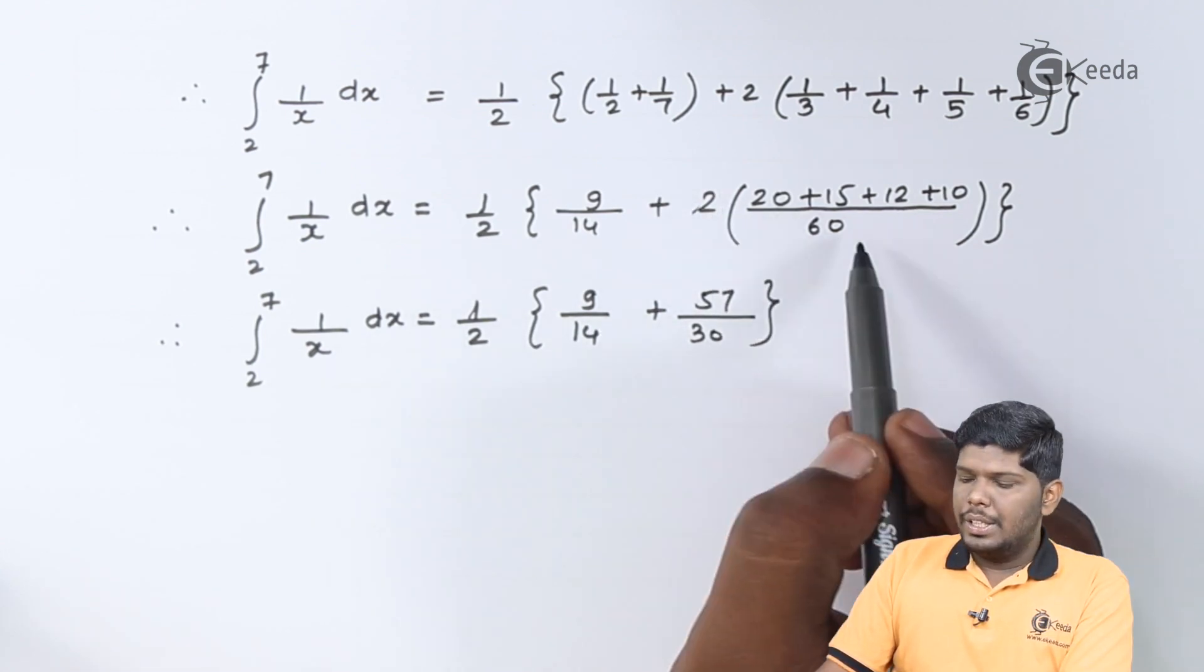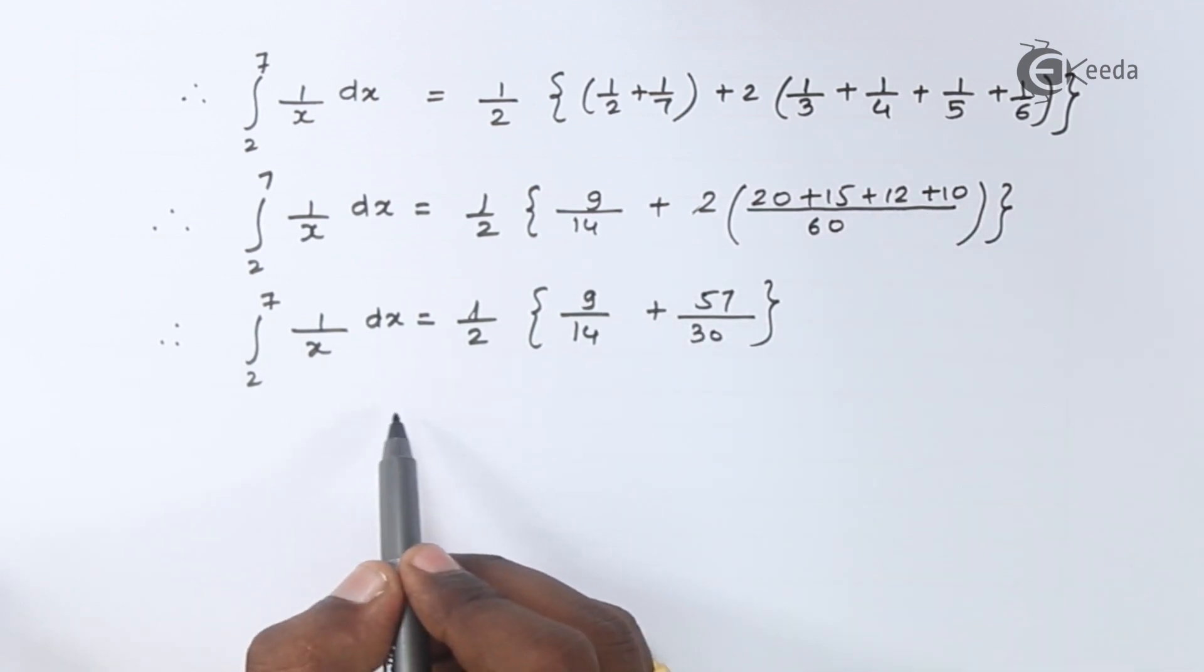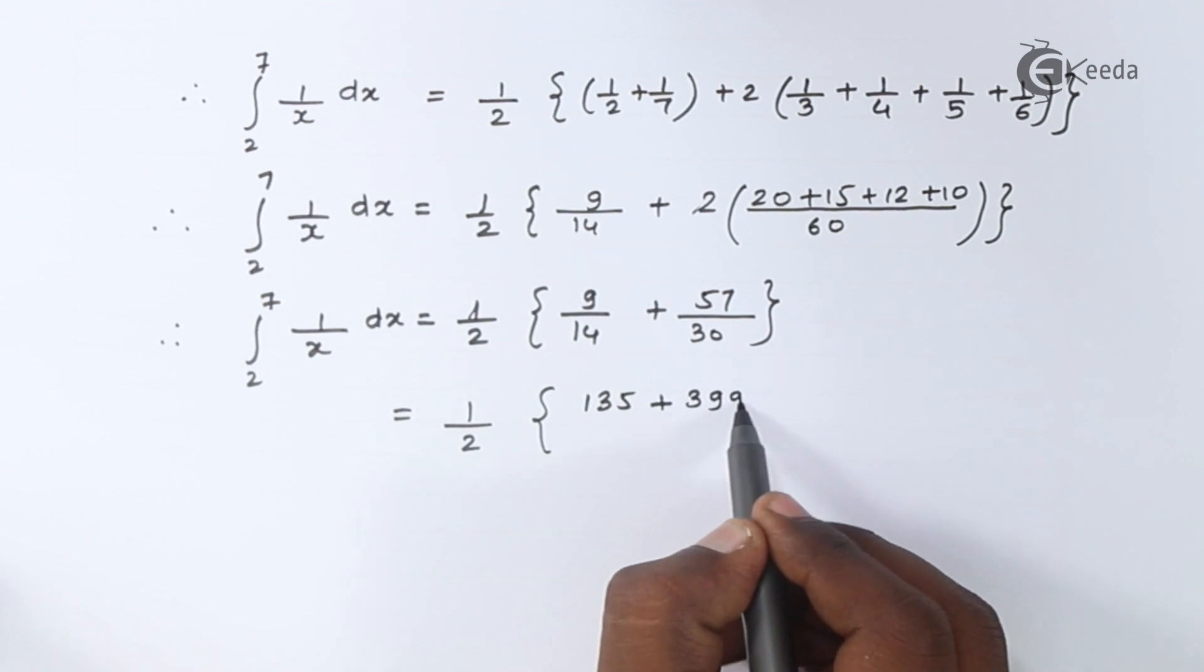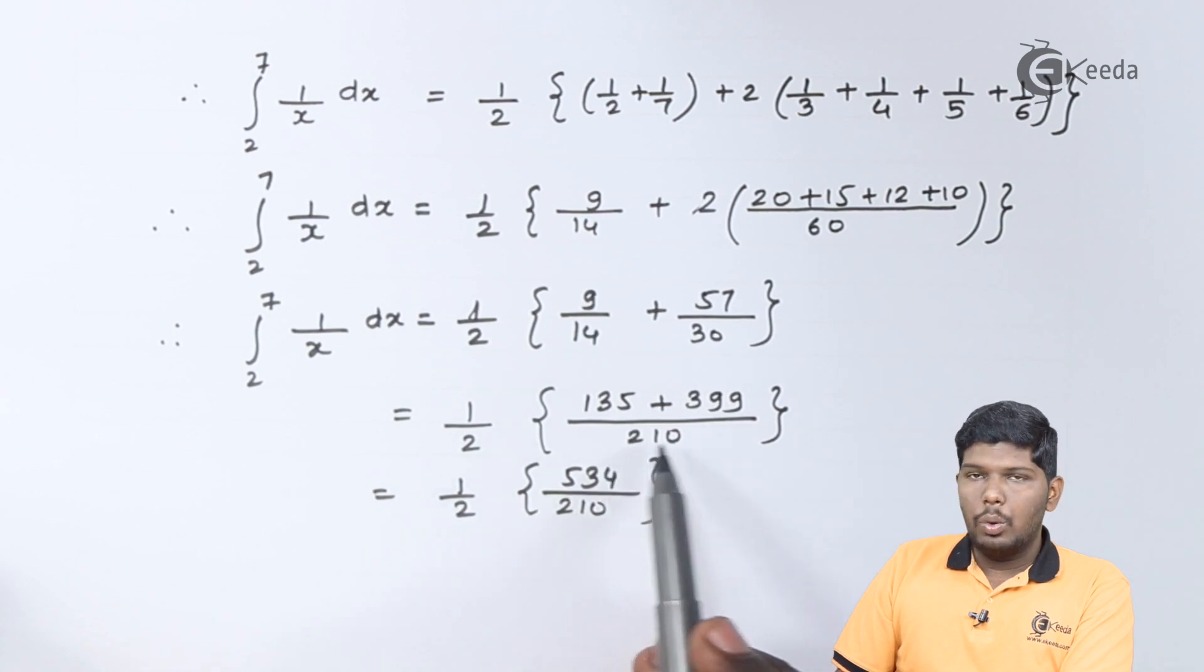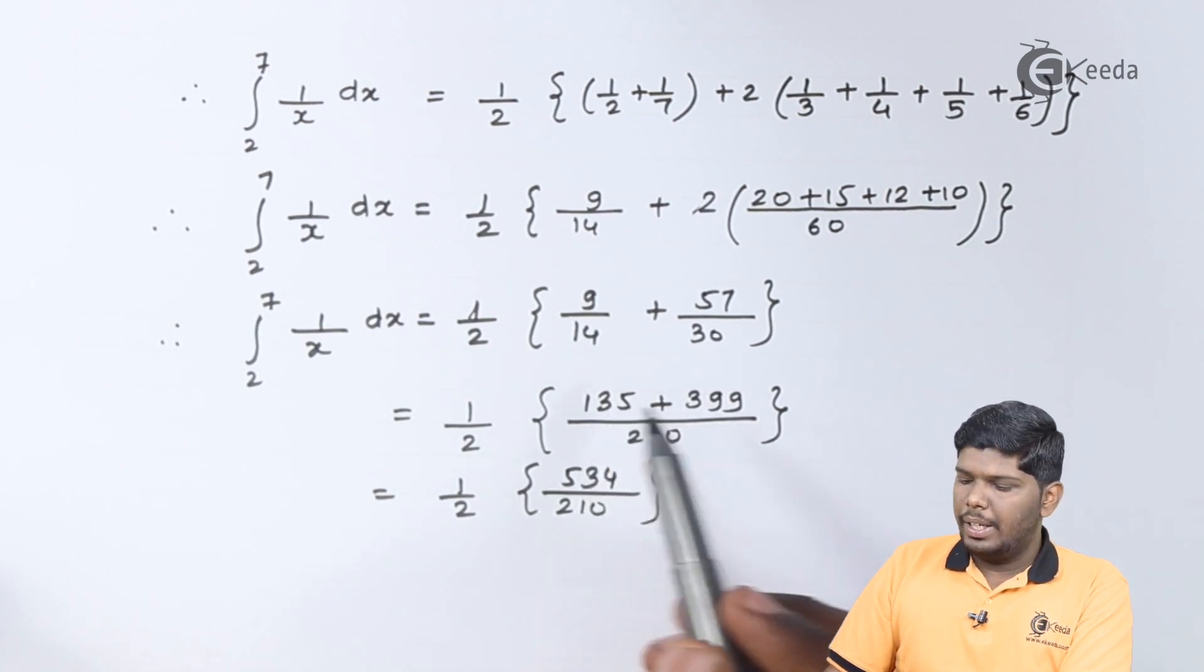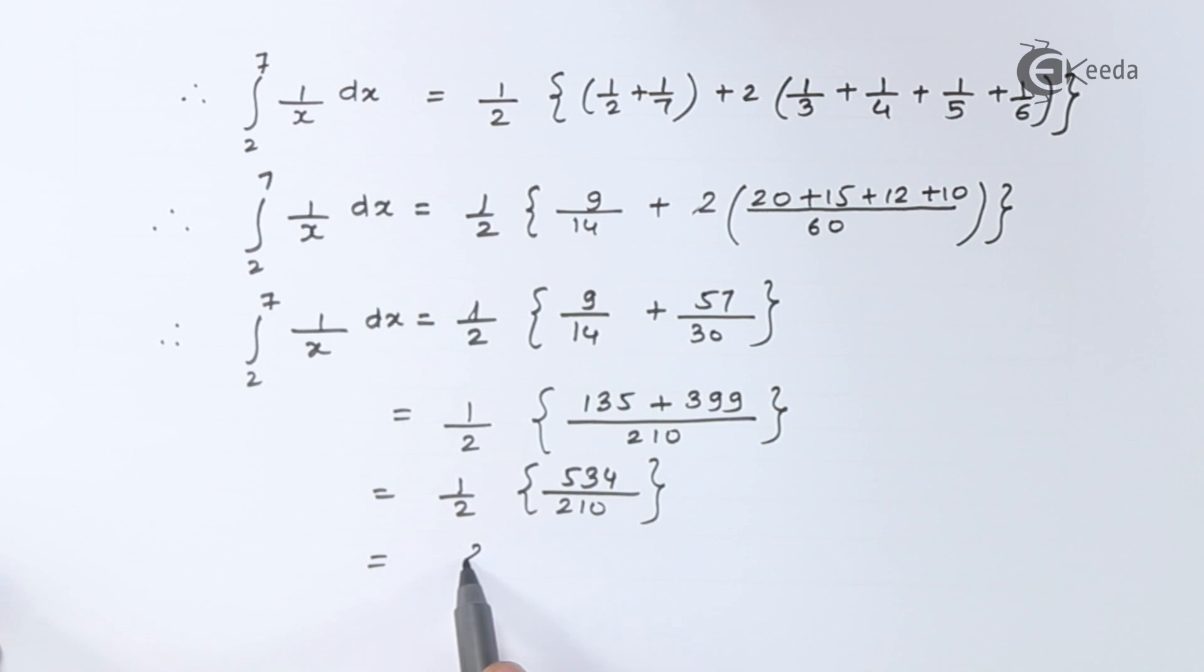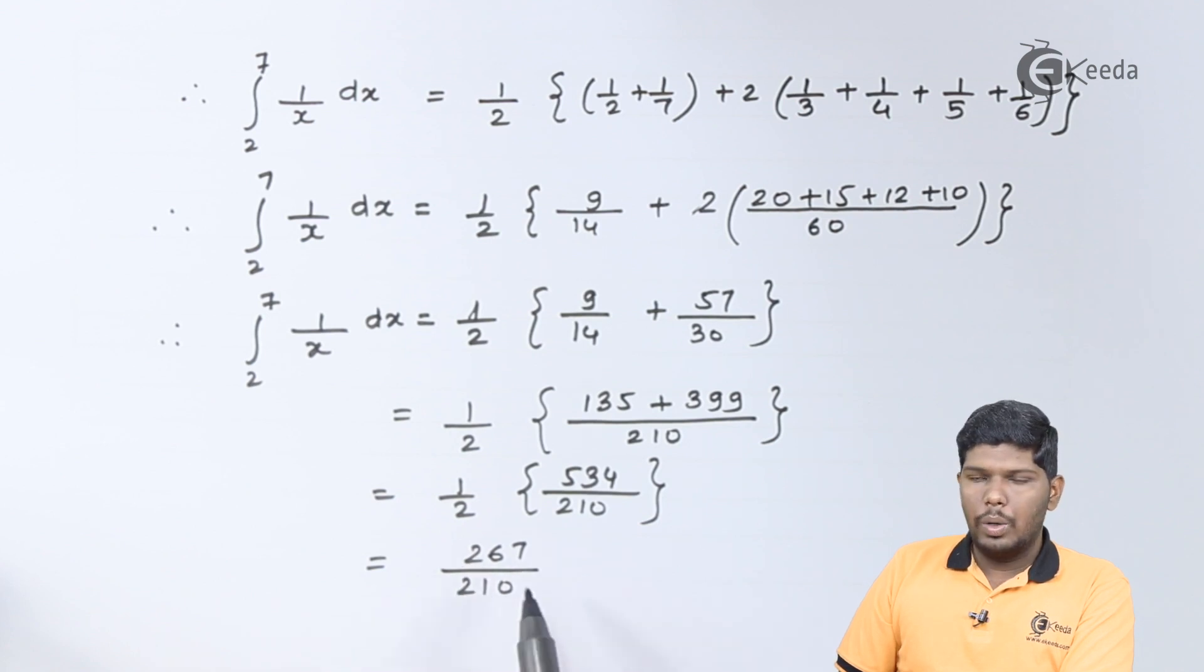In the next step here will be 1 by 2 and 2 by 30, and addition of all this term will give you 57. Now let us solve these 2 fractions. Taking 210 as LCM, in the numerator we have 135 plus 399 that will give you 534 upon 210. On further simplification with 2 we will get 267 upon 210, that is equal to approximately 1.2714.